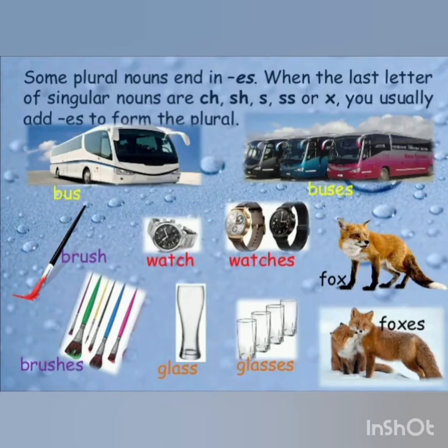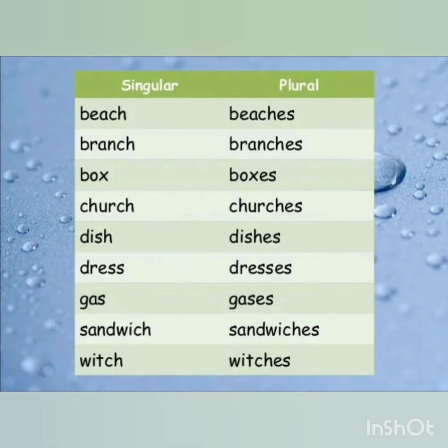Some plural nouns end in E-S. The rule is: when the last letters of a singular noun are CH, SH, S, or X, you usually add E-S at the end. For example: bus becomes buses, brush becomes brushes, watch becomes watches, glass becomes glasses, fox becomes foxes, beach becomes beaches, branch becomes branches.